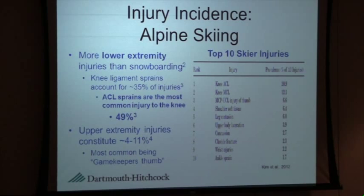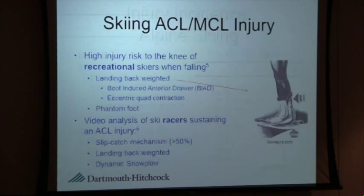Upper extremity injuries are much more rare in skiers, with the most common being something called gamekeeper's thumb or skier's thumb — an injury to the ulnar collateral ligament of the thumb based on using your pole.